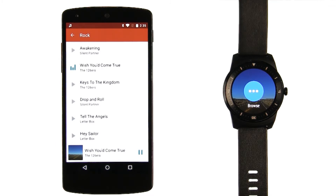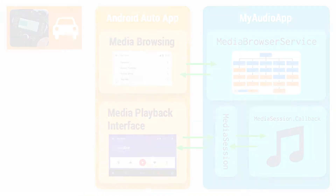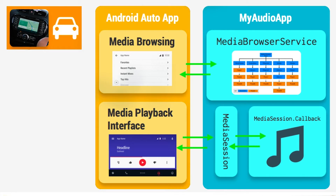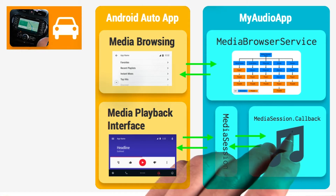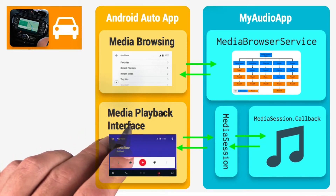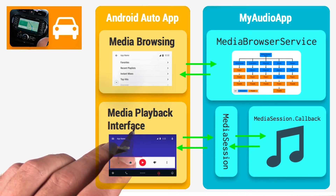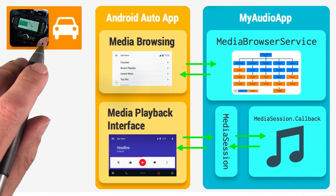You can try the UAMP sample out yourself to see this in action. So let's talk about how we implement a media playback app for Android Auto. This diagram shows three components: your app on the right, which is all in an APK file, and the Android Auto companion app, which is responsible for drawing the user interface and sending the pixels to the vehicle display.